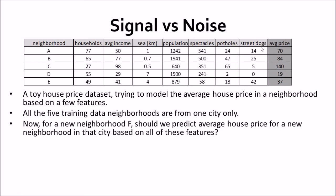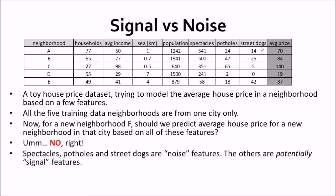Do you think we should predict average house price based on all of these features? No. The spectacles, potholes, and street dogs are noise features — although they are present in the dataset, they do not contribute much to the average price. For example, I cannot say that since there are 541 people with spectacles they are geeky and earn more, and I cannot say that since there are only 2 potholes it is a good neighborhood with a high average price.